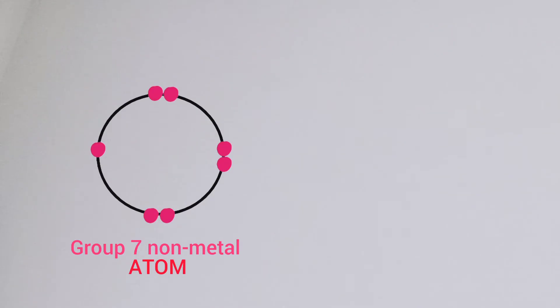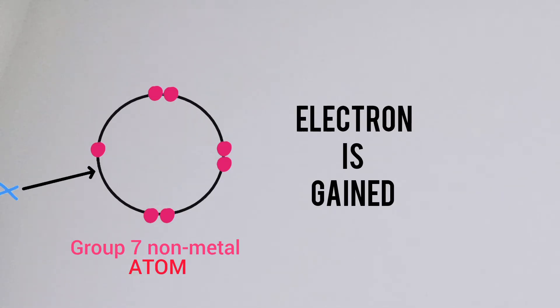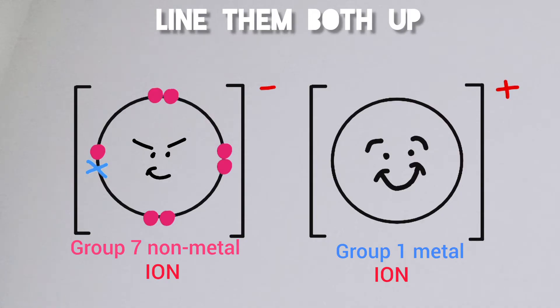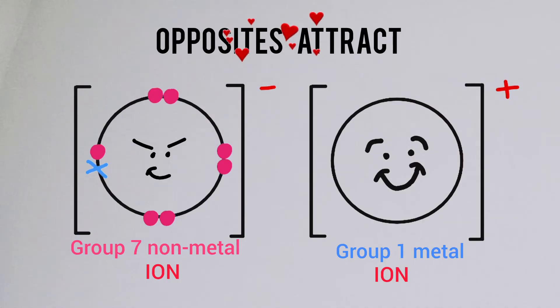To get to full shell, an electron's gained. Group 7 atoms, they don't show kindness. All they do is take and then become 1 minus. Line them both up and then see what happens. Opposites attract with a bunch of passion.